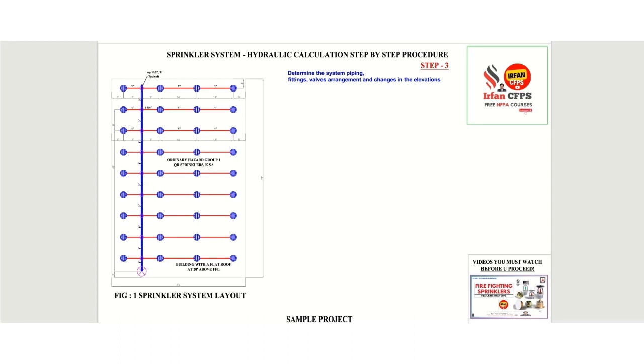Let us look at Step 3. In Step 3 we need to determine the system piping fittings, valves arrangement, and also if there are any changes in the elevation of pipes. So now we shall go through the type of pipes and fittings which we are going to use in this project.